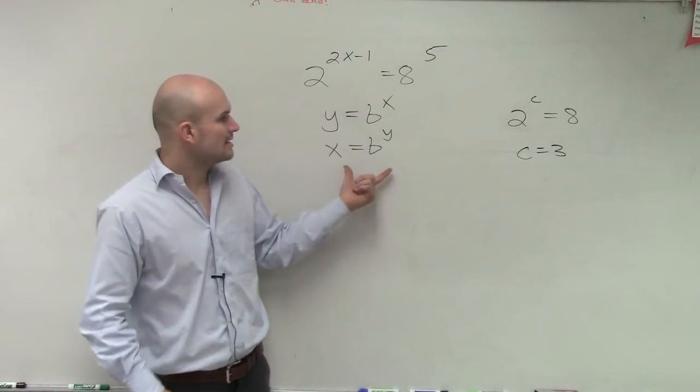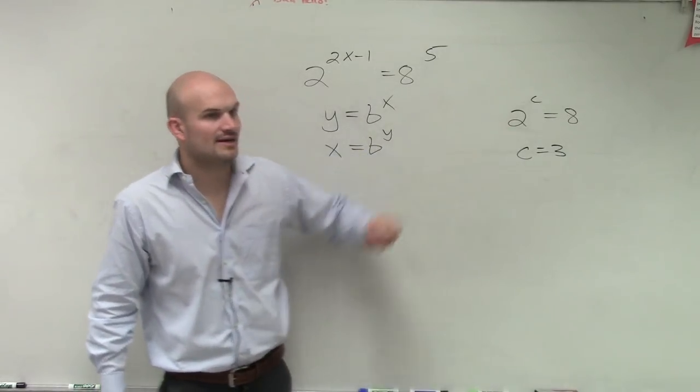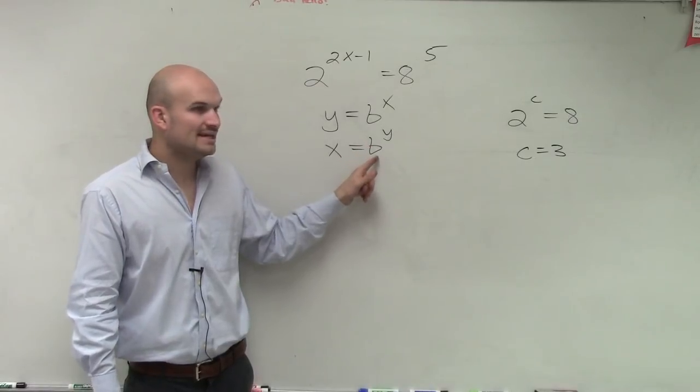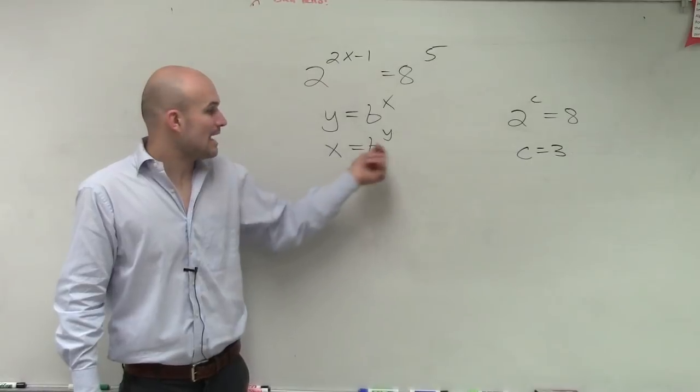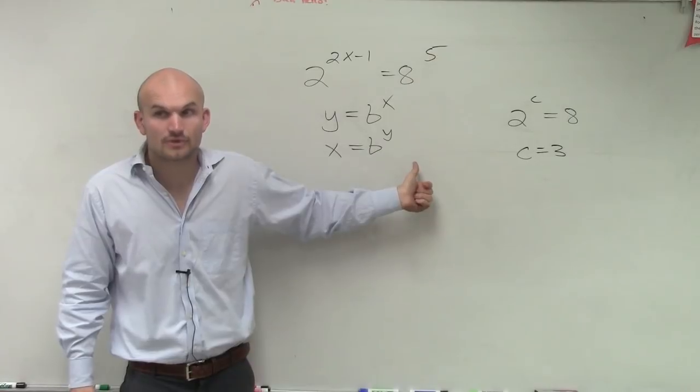Now, kind of compare this to what we have over here, right? This is saying b raised to what value of y gives you c. Now, we need to figure out what y is to find the inverse, right? We need to solve for y, correct?